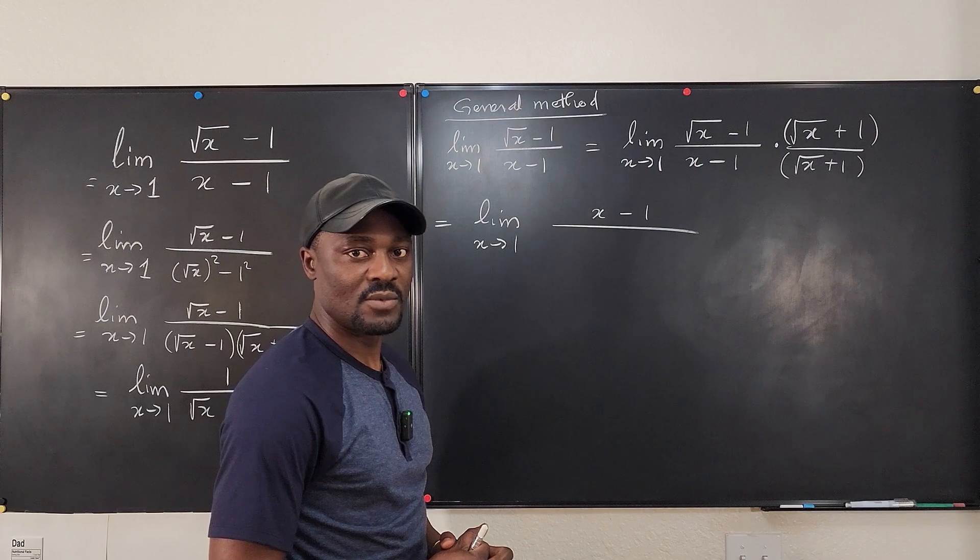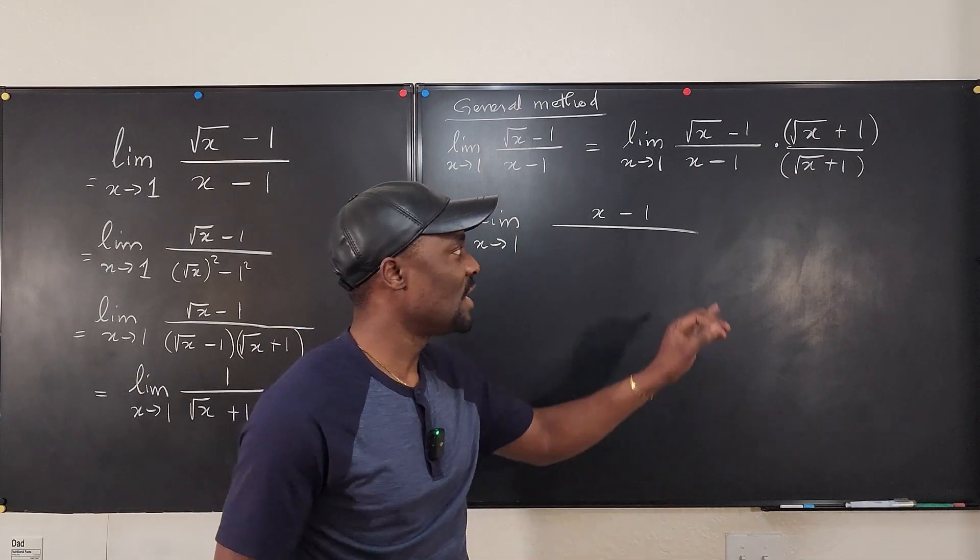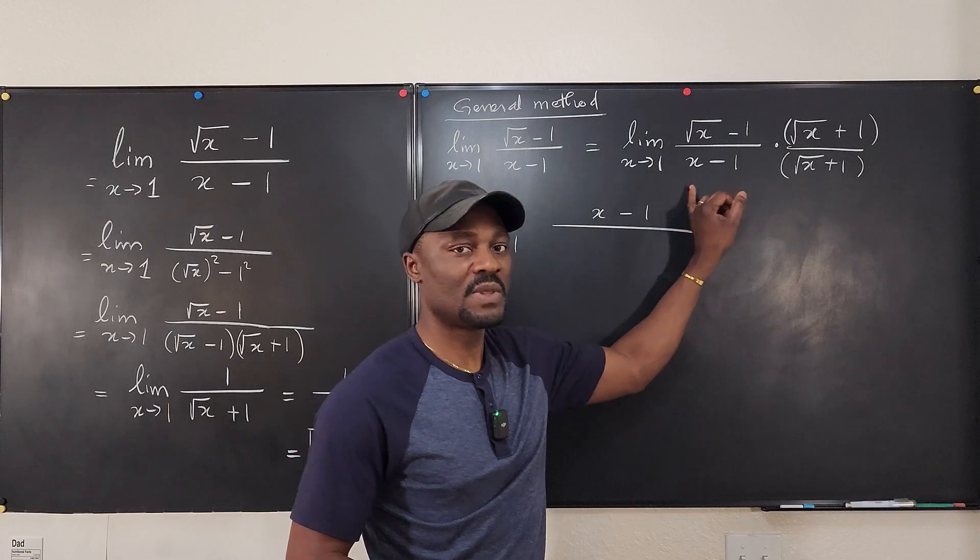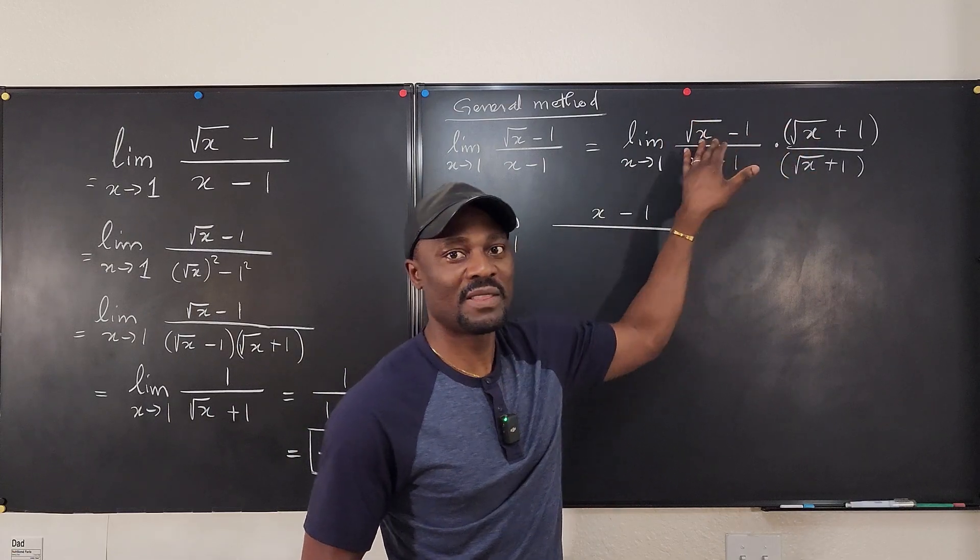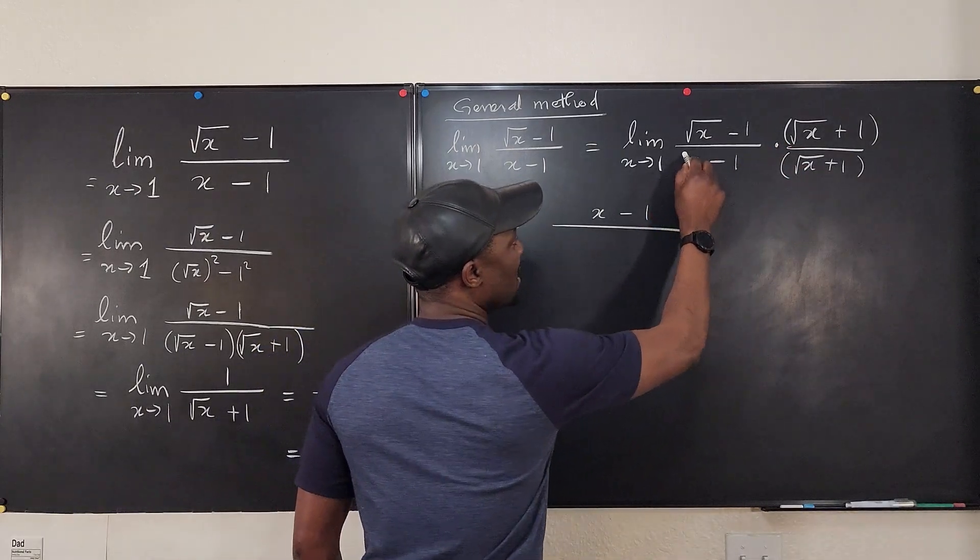And in the bottom, what do you end up with? Every time you rationalize, my recommendation is do not distribute the denominator. Only take care of the part that has the conjugate. The other part, leave it that way. So as you can see,